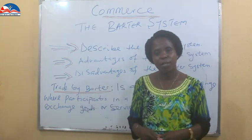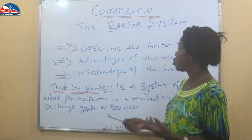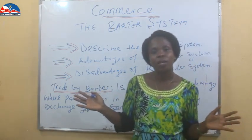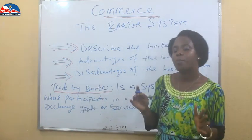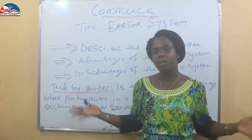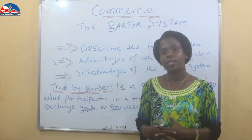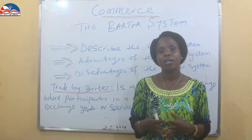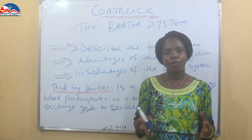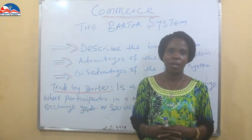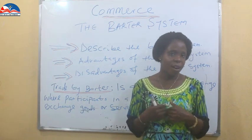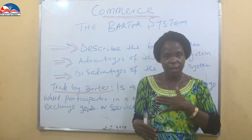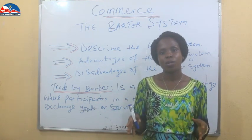What is trade by barter? The barter system is a system of exchange where participants in the transaction directly exchange goods or services. To aid understanding: people who have products and need another product come into direct contact to exchange these goods. For example, if you have palm oil and I have garri — I have excess palm oil and I want to use some of it to exchange for garri from you, because I need garri.